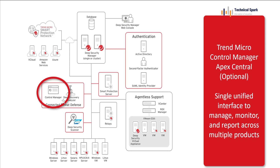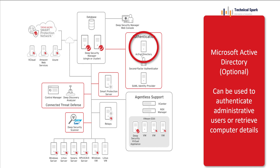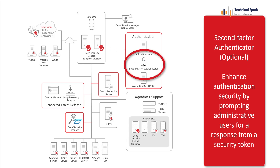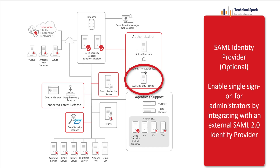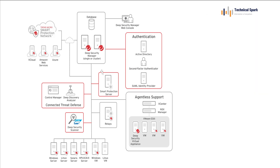Control Manager — please note the name has been changed to Apex Central — is used to manage multiple Trend Micro products from a centralized management console. Active Directory can be used to create a trust relationship between your endpoints and your management server, as well as for AD-level authentication when integrated with Deep Security. Deep Security provides two-factor authentication for users logging into the console. The third option is a SAML identity provider for single sign-on, establishing a trust relationship between two parties — it supports Active Directory Federation Services, Okta, Ping One, and Shibboleth.